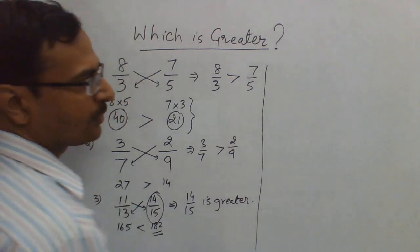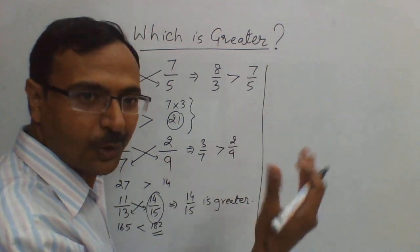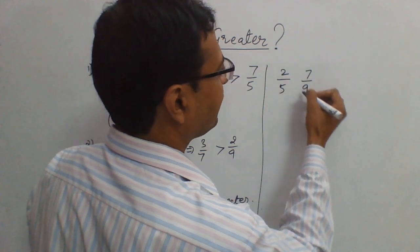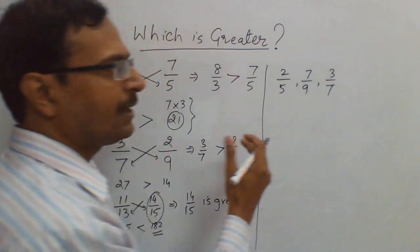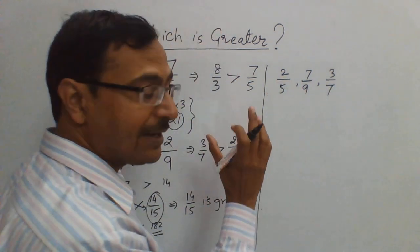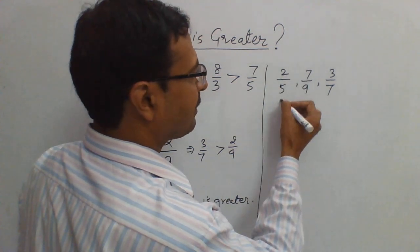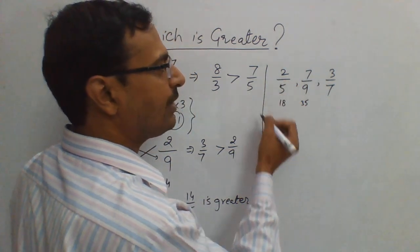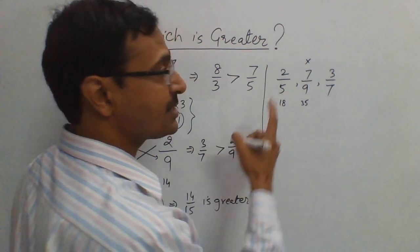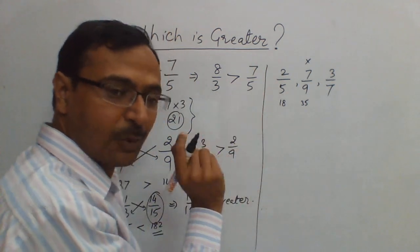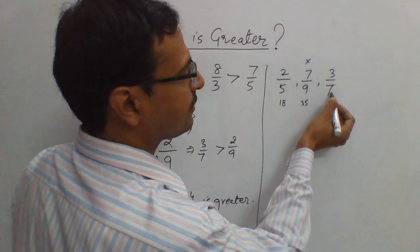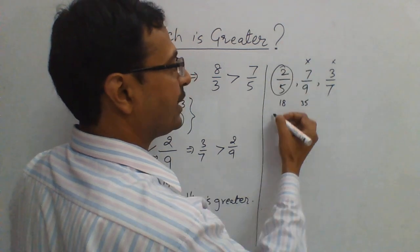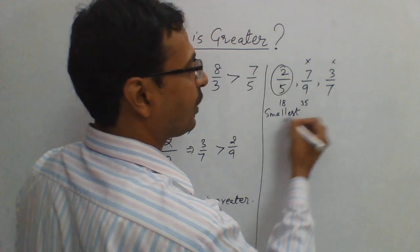Now you can use this for arranging in ascending or descending order. Like suppose you have to arrange 2 by 5, 7 by 9 and 3 by 7 in ascending or descending order. So I will try and find the smallest one first. See, this is giving me a product of 18, this is giving me a product of 35. So obviously 7 by 9 is greater than 2 by 5. So if this is greater I will not consider this. Now consider these, 14 and 15. So 15, now this one is greater. So this is the smallest. Now see the ease with which I have found the smallest.